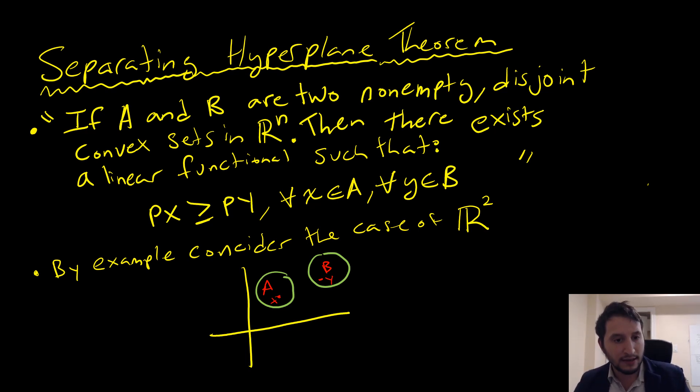If set A and set B are two non-empty disjoint convex sets in an Rn space, meaning a real number space of dimension N, then there exists a linear functional such that P of X is greater than P of Y for all X which is a point in A, and for all Y in B.